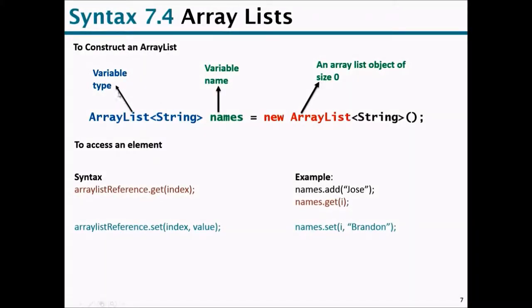Looking at the syntax: ArrayList<String> names = new ArrayList<String>(). This is your variable type — we are creating an ArrayList of type String. 'names' is the variable name, 'new' is the operator for creating and instantiating an object, and the opening and closing parentheses indicate we are creating an ArrayList object of size 0. We read this as: 'names is an ArrayList of type String.'